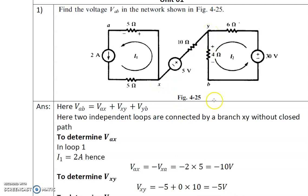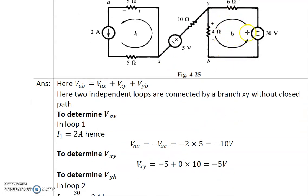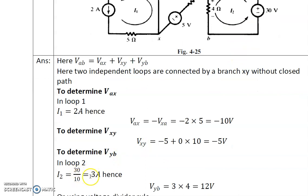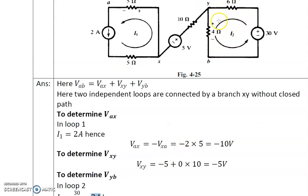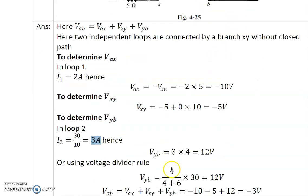To determine VYB, there is a voltage source in this loop, so we need to calculate the current first. 6 plus 4 gives 10 ohm total equivalent resistance. 30 divided by 10 gives a current of 3 ampere. VYB is along the direction of the current, so VYB = 4 into I2 = 4 into 3 = 12 volts.